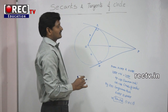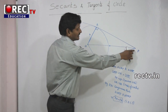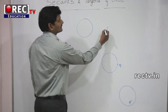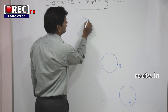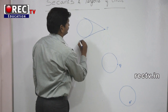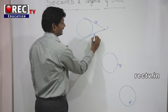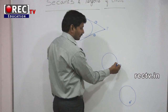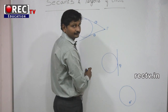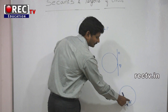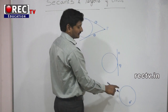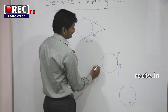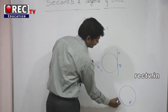The lengths of tangents drawn from an external point to a circle are always equal. If the point P lies outside the circle, we can draw two tangents from that external point. If the point lies on the circle, we can draw only one tangent through that point. If the point lies inside the circle, we cannot draw a tangent through that point. So the number of tangents is 2, 1, and 0 respectively.